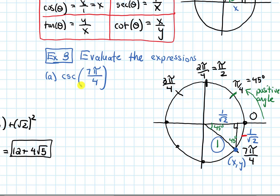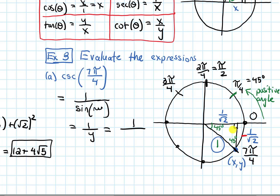Cosecant is 1 over sine. Sine is the y-coordinate, so we need 1 over (−1/√2). Dividing by a fraction is the same as multiplying by the reciprocal, so we get negative √2 as our answer.